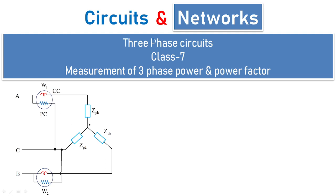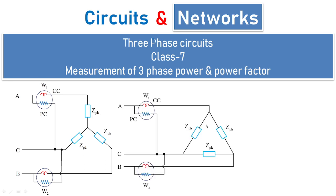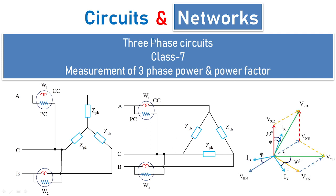Here you can see a star connected load is connected to phase ABC, and wattmeter 1 is arranged in this fashion, wattmeter 2 is arranged in this fashion. This is for star connected load. For a delta connected load for phase ABC, this is how the arrangement is made, and in order to calculate the power factor, we are taking the help of a phasor diagram. We are going to see how to do all these things in this particular class.